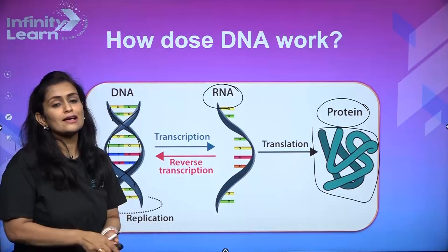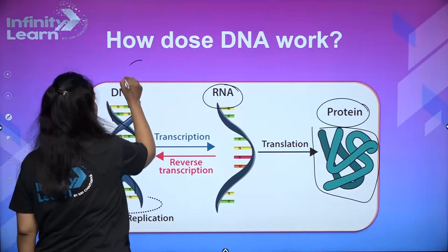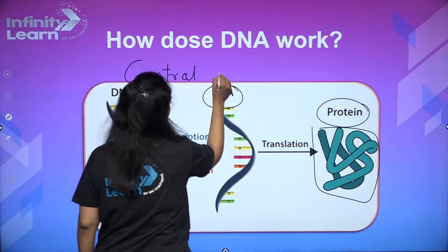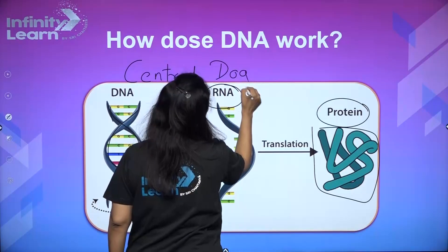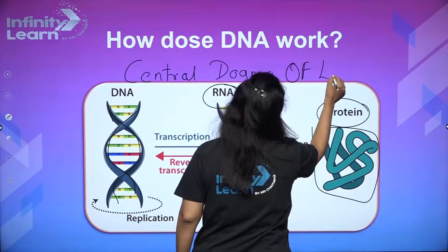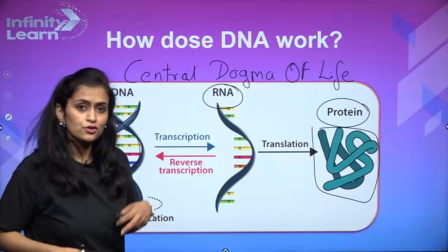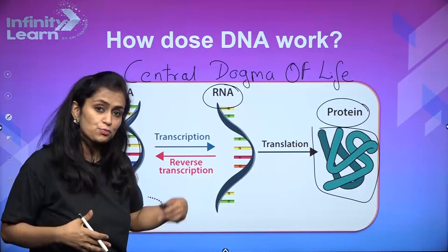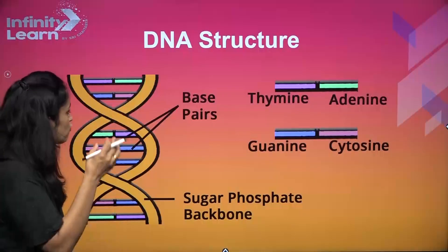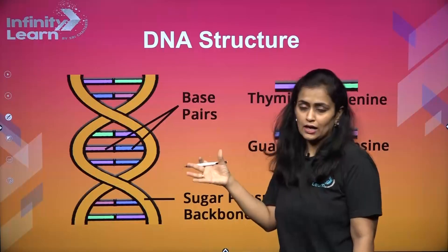So this is called DNA to RNA transcription, and RNA to protein translation. This is called the central dogma of life — very important. So: DNA to RNA, and RNA to protein. Now, what is present in this DNA that allows this coding to be done?